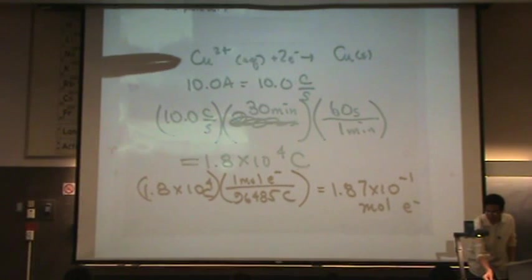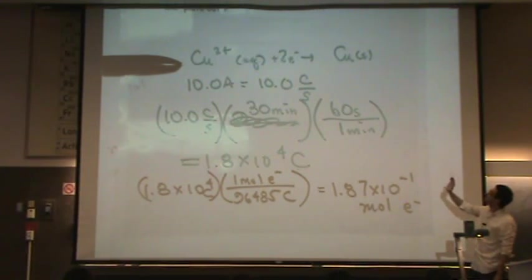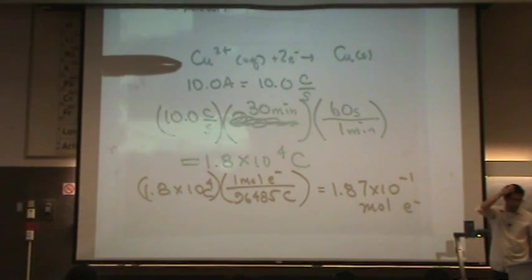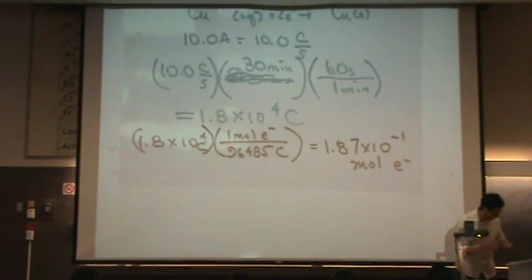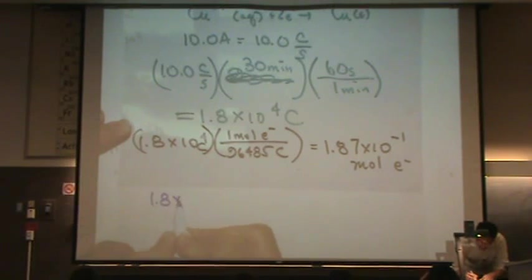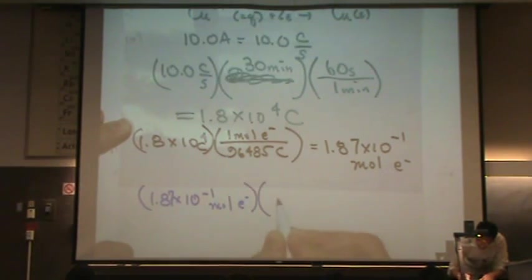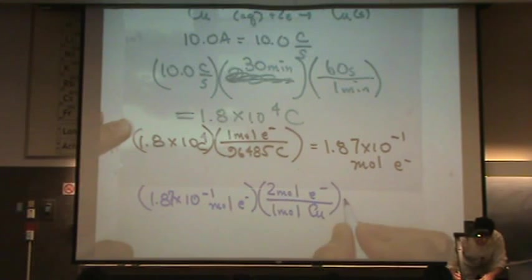That's nice because now I'm going to use a molar ratio from this reaction up at the top. There are two moles of electrons for every mole of copper. Just using a straight Chem 2A sort of conversion. So again, 1.87 times ten to the minus one moles of electrons. And I know there's two moles of electrons from the reaction for every one mole of solid copper. This turns out to be 9.25 times ten to the minus two.